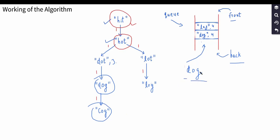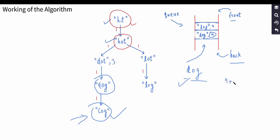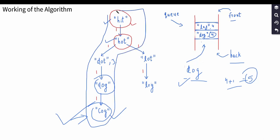We find that 'cog' is the target word, so we return the number of words used to reach 'cog'. The integer stored with 'dog' is 4, and we add one for 'cog', giving us 5. We reached 'cog' first along this path, so this is the shortest path and the number of words along it is 5 — that's the answer.